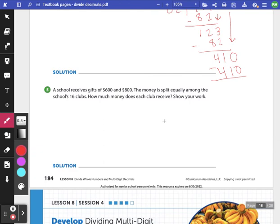Number 5, a school receives gifts of $600 and $800. The money is split equally, keywords, among the school's 16 clubs. How much money does each club receive? So each is also a keyword. The school receives two different gifts, $600 and $800. But they're splitting all of the money. So first we have to combine that and say that the school really received $1,400. Then we're splitting that between the 16 clubs.